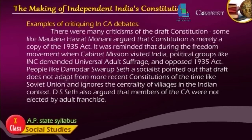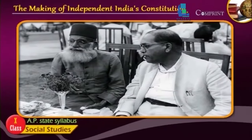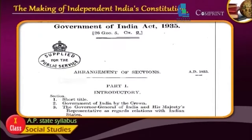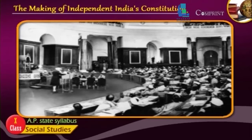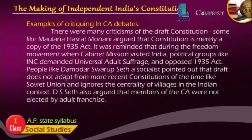Examples of critiquing in CA debates: There were many criticisms of the draft constitution. Maulana Hasrat Mohani argued that the constitution is merely a copy of the 1935 Act. It was reminded that during the freedom movement, when the Cabinet Mission visited India, political groups like the INC had demanded universal adult suffrage and opposed the 1935 Act. People like Damodhar Swarup Seth, a socialist, pointed out that the draft does not adopt from more recent constitutions of the time like the Soviet Union and ignores the centrality of villages in the Indian context. D.S. Seth also argued that members of the CA were not elected by adult franchise.